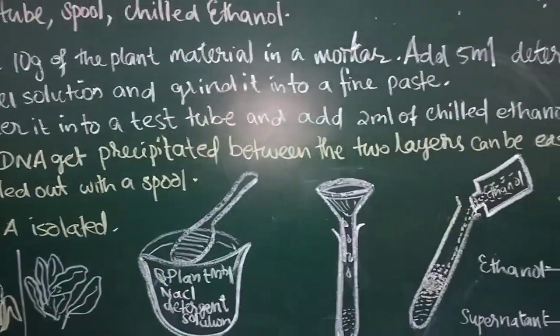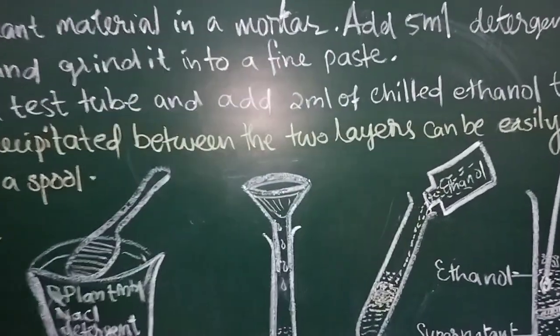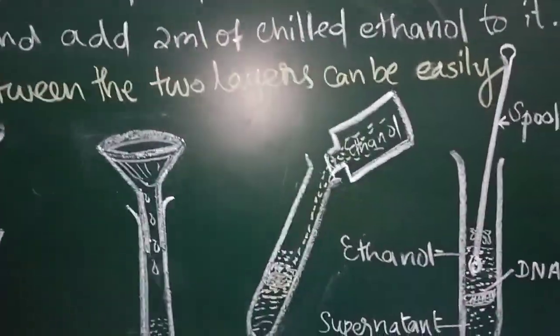Then, you will be adding chilled ethanol to get the DNA precipitated in the junctional layer between the two.